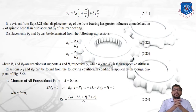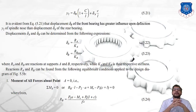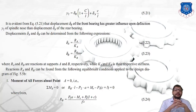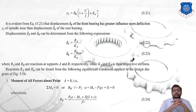From equation 5.21, it is evident that displacement δ_b of the front bearing has a greater influence on deflection y2 of the spindle nose than displacement δ_a of the rear bearing. The displacements δ_a and δ_b can be determined from: δ_a = R_a / k_a and δ_b = R_b / k_b, where R_a and R_b are the support reactions at positions A and B, and k_a and k_b are the respective stiffnesses. To find R_a and R_b, we use equilibrium conditions.